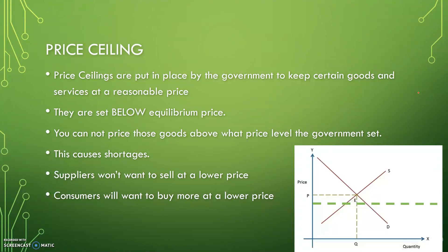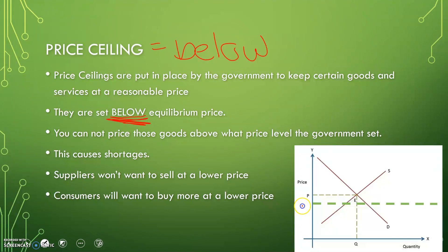Price ceilings are put in place by the government to keep certain goods and services at a reasonable price. A good example is the rent ceilings in New York. They are set below equilibrium price — you cannot price those goods above what price level the government has set. This causes a shortage, because shortages are below equilibrium. Suppliers won't want to sell at a lower price, and consumers will want to buy more at a lower price. Here on the graph is a dotted line — that is the ceiling.